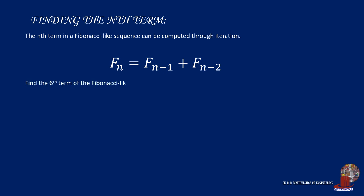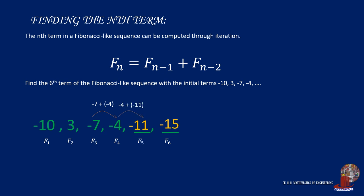For example, we are to determine the sixth term of the Fibonacci-like sequence having initial terms negative 10, 3, negative 7, negative 4. As these are the first four terms in the sequence, we can iterate F sub 5 by adding negative 7 plus negative 4, which is negative 11. Then we can identify the required F sub 6, which is solved by adding negative 4 and negative 11, or that is negative 15.